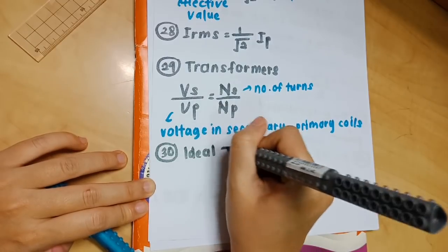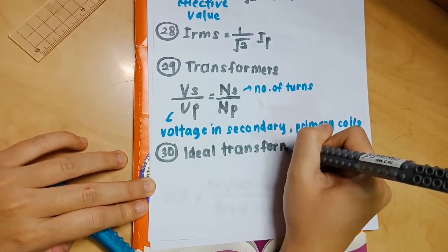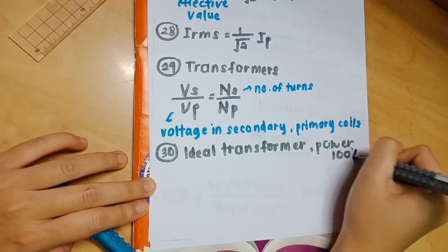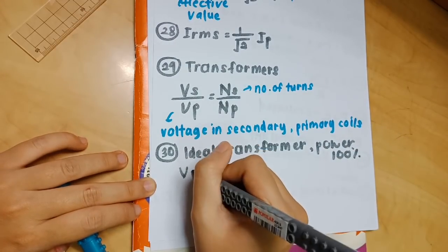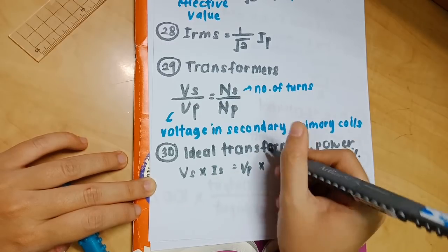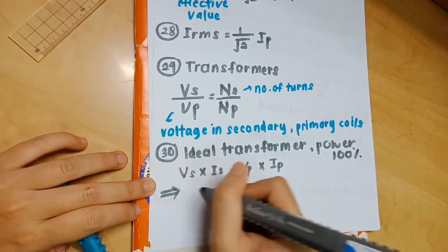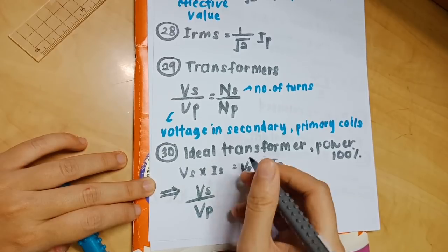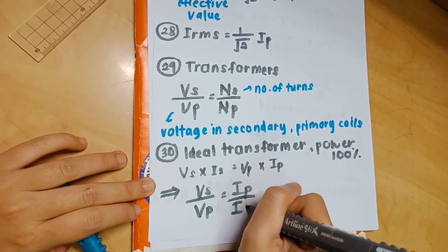Number 30: in an ideal transformer, power is always 100% because no energy is lost. So VS times IS equals VP times IP. There's a new formula derived from this: VS over VP equals IP over IS.